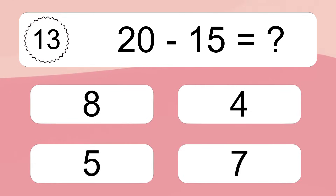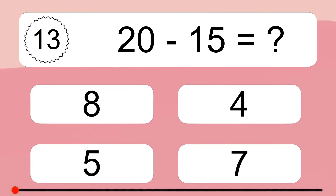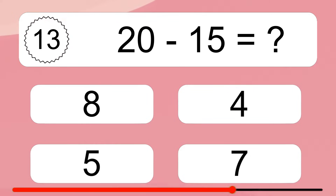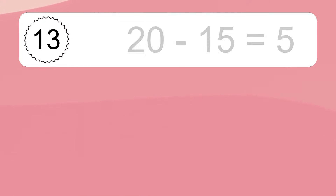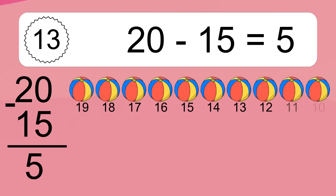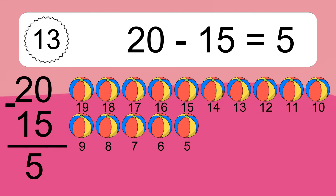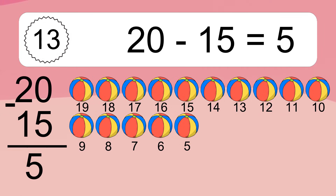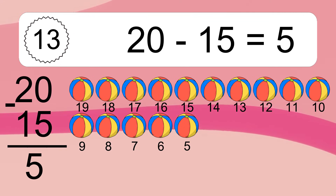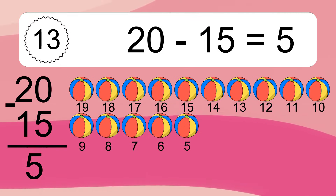20 minus 15 equals what? 20 minus 15 equals 5. Let's count it: 19, 18, 17, 16, 15, 14, 13, 12, 11, 10, 9, 8, 7, 6, 5.